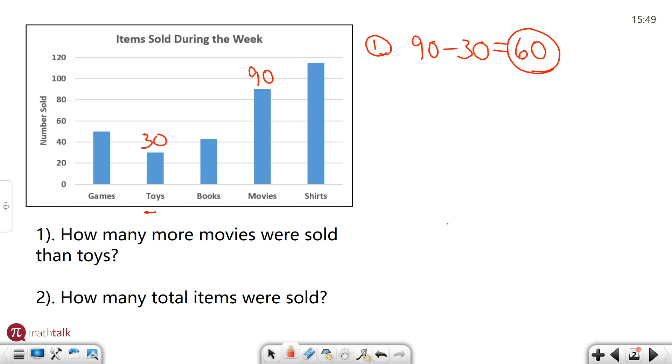Number two says how many total items were sold? Total items is on the entire graph, how many items were there. So games, I'm going to call that about 50. It's about midway between 40 and 60. I have toys already. Books is right above 40, so I'll probably call that about 45. Again, when there's no specific number listed, you can estimate a little bit.